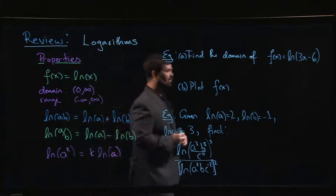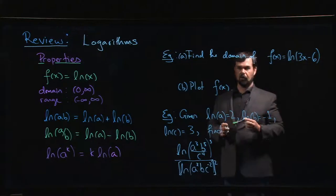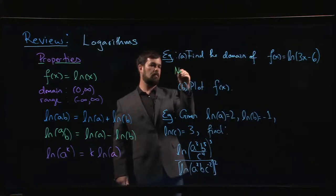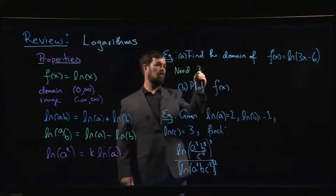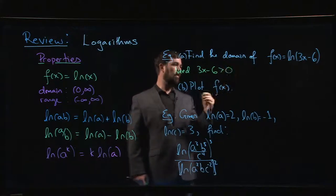So that means the input has to be bigger than 0. When we come over to something like this, it's no longer the case that we just need x to be bigger than 0. We need 3x minus 6, the whole input, has to be bigger than 0.